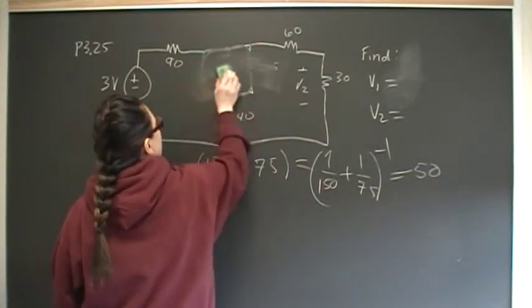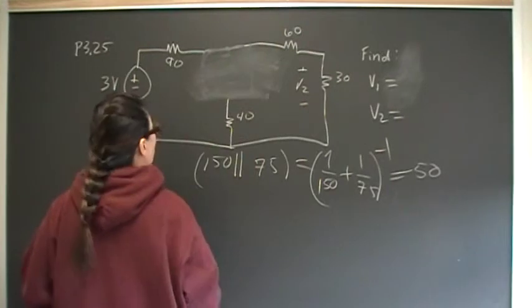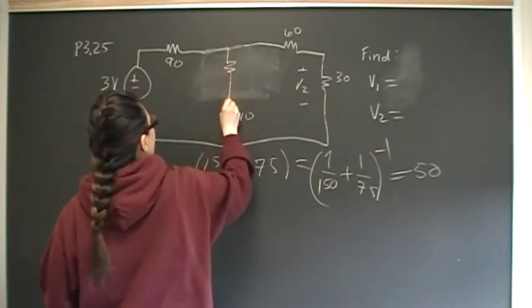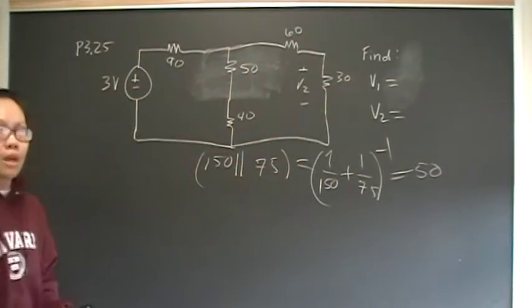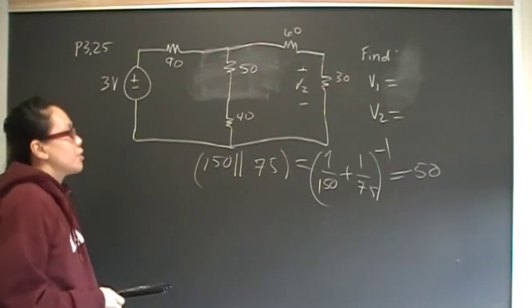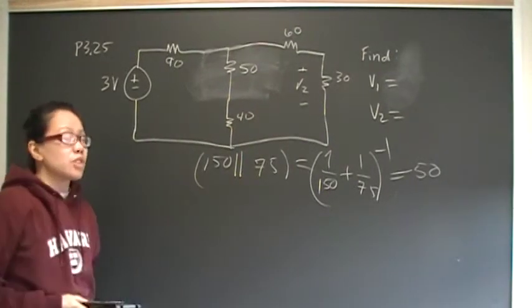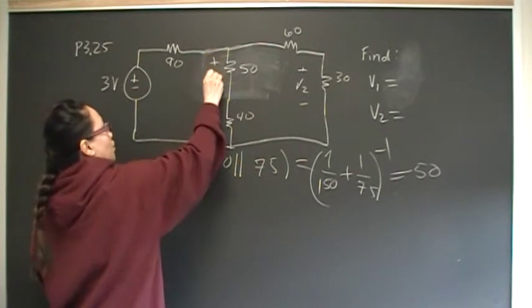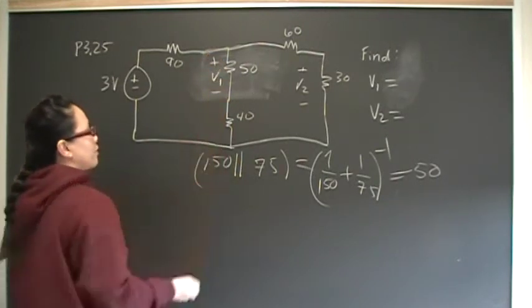So now we can replace this with 50 ohm resistor. Same thing, and it'll have the same voltage drop. Okay, so therefore, that's the first hint that I gave you. The second hint was to use voltage division twice.